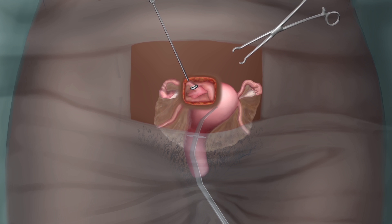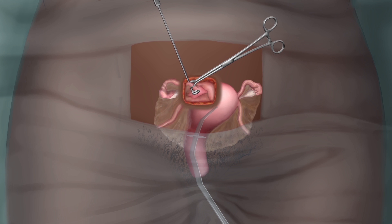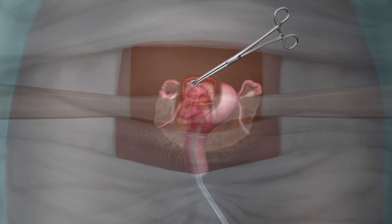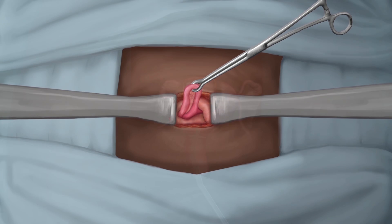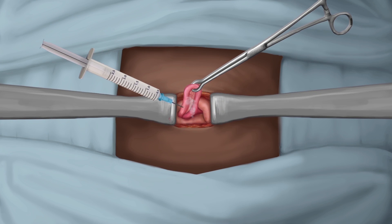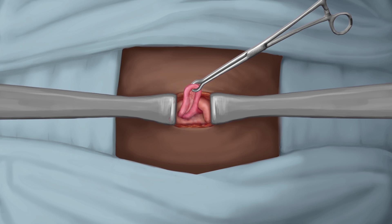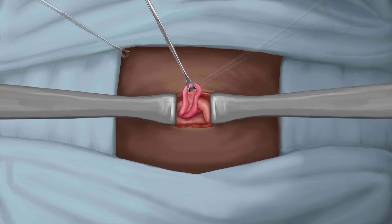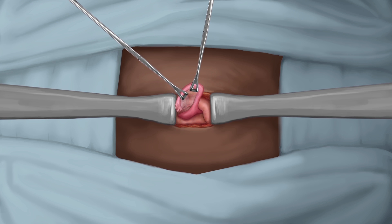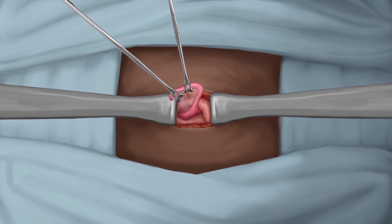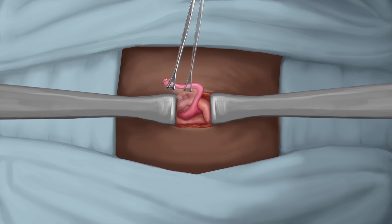Grasp the fallopian tube with Babcock forceps and bring it through the incision. Drip lidocaine onto the tube and uterus. Identify the fimbriated end by walking the tube distally.